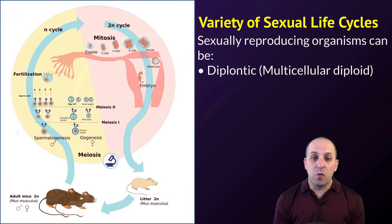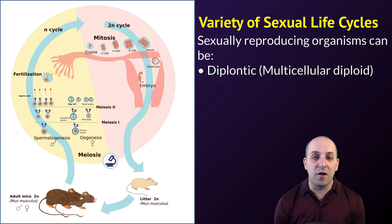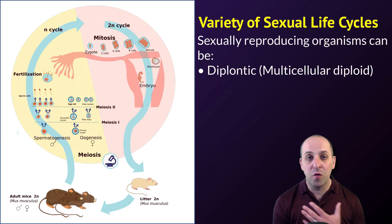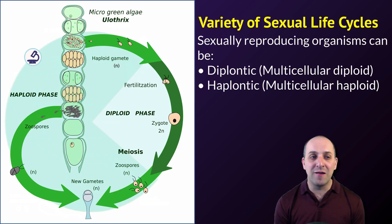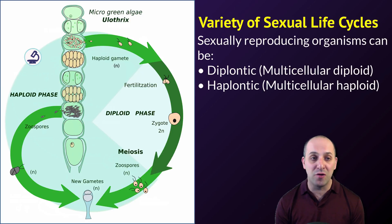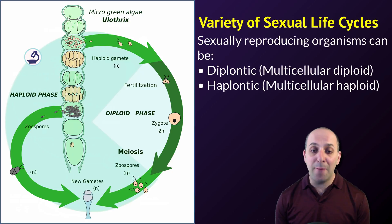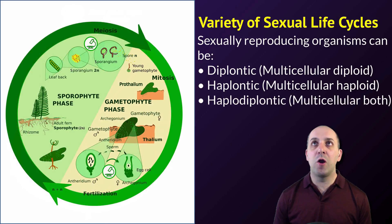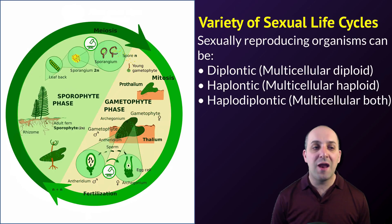There's a large variety of sexual life cycles. Diplontic organisms are ones where the multicellular stage of the organism is exclusively diploid, as shown here by these mice. We and all animals are diplontic in terms of our sexual life cycles. Haplontic stages are the exact opposite — the multicellular stage of the organism is exclusively made out of haploid cells, as shown in a microscopic algae known as Ulothrix, but fungi like mushrooms are generally haplontic as well. Or there can be haplodiplontic, where there are multicellular stages for both the haploid form and the diploid form — also sometimes referred to as the alternation of generations — commonly seen in certain lineages of plants, for instance the ferns that this diagram is showing.